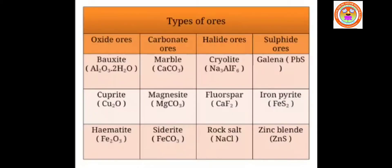The first topic is types of ores. We have got varieties of ores. Some ores are called oxide ores, some are carbonate ores, some are halide ores, and some are sulfide ores. We can classify ores on the basis of the elements present in them. The examples for oxide ores are bauxite, cuprite, and hematite.